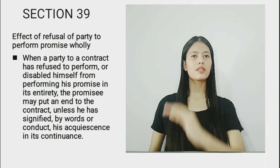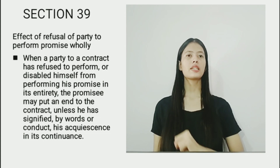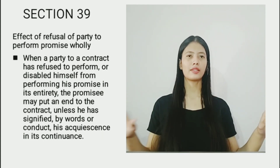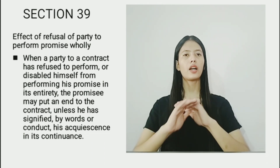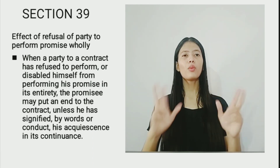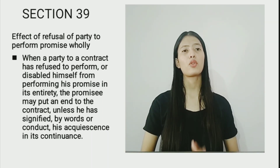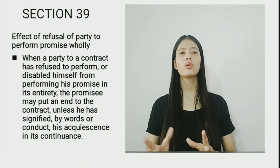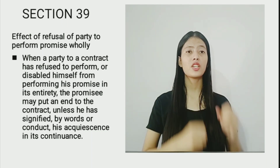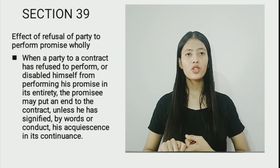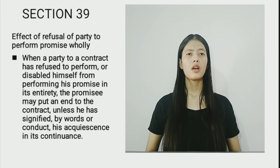This section states that if there are two parties in a contract, and one party has not fulfilled their promise, that party can apologize by their conduct or action. It then depends on the other party whether they want to let the contract continue or not. The other party can either claim compensation by terminating the contract, or the defaulting party can apologize and continue.